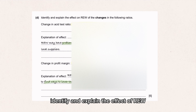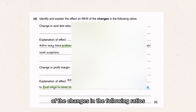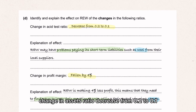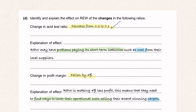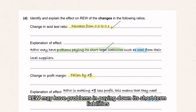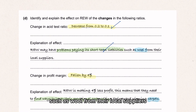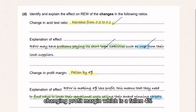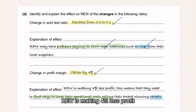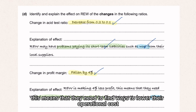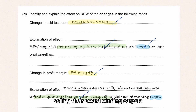Identify and explain the effect on REW of the changes in the following ratios. The acid test ratio decreased from 0.2 to 0.1 — REW may have problems paying down its short-term liabilities, such as wool from their local suppliers. The change in profit margin is a fall of 4% — REW is making 4% less profit, meaning they need to find ways to lower their operational costs selling their award-winning carpets.